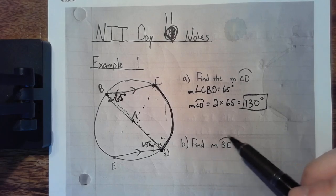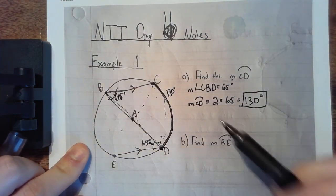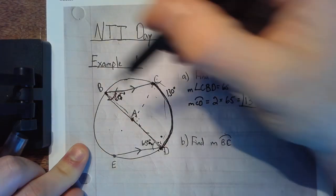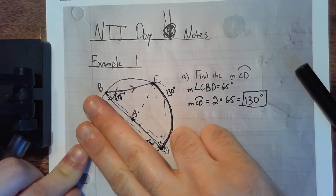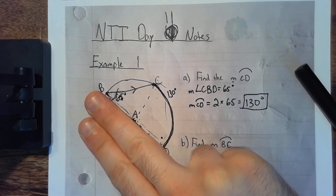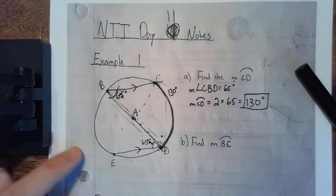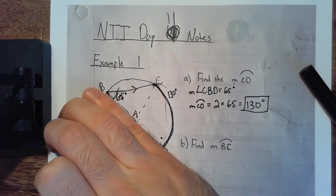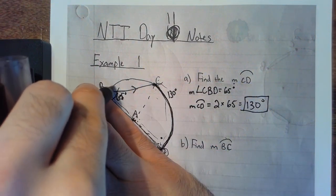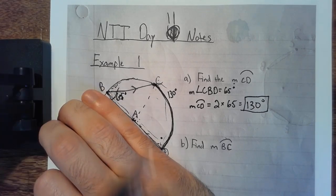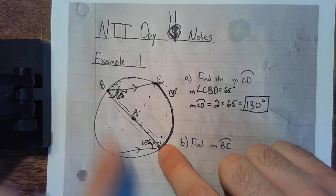Part B says: find the measure of arc BC. We know the measure of arc CD is 130 degrees. Since A is the center of the circle, BD is the diameter, cutting the circle in half. A full circle is 360 degrees, so half of that across the diameter is 180 degrees. Now I'm trying to find arc BC.